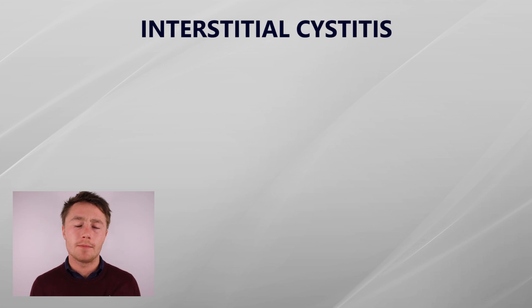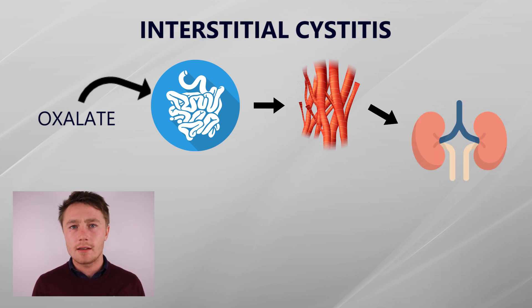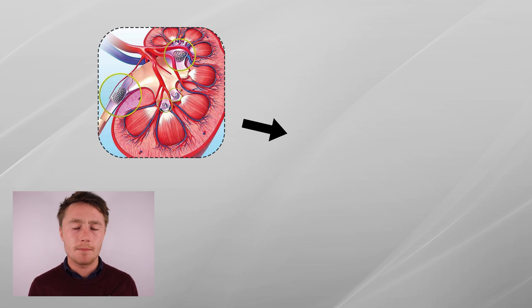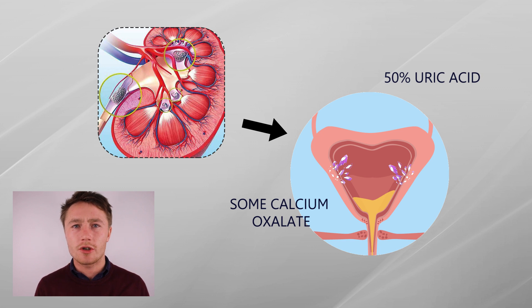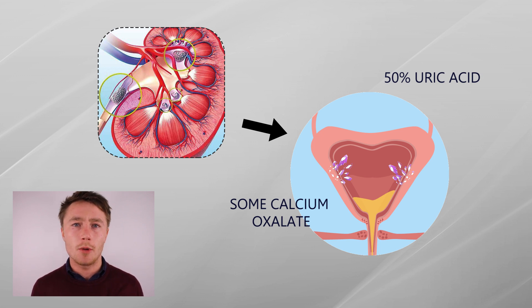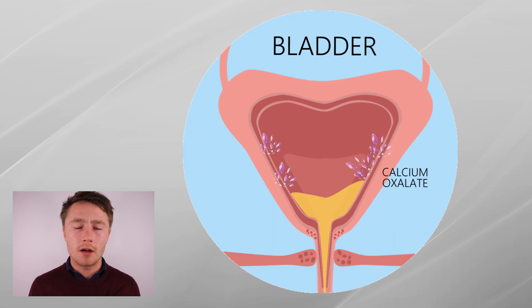Let's examine how oxalate can actually be implicated in something like interstitial cystitis. When we look at how the body deals with oxalate, it's absorbed into the bloodstream, goes to the kidneys, and ideally passes out through the kidneys into the bladder, then through the urine via the urinary tract. You can have oxalate crystals deposited in the kidney, but you can also have oxalate crystals which deposit in the bladder — these are called bladder calculi. Most bladder calculi are made up of uric acid, but there is also a small portion made up of calcium oxalate.